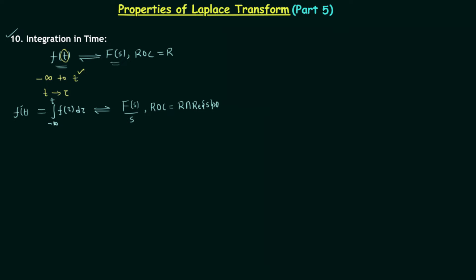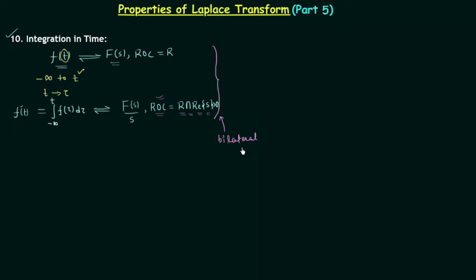To understand how we obtained the region of convergence — at least R intersection real part of s greater than 0 — we will prove this property. The proof is similar to what we had in the Fourier transform chapter, but we prove it here to understand the ROC. This result is for the bilateral Laplace transform.